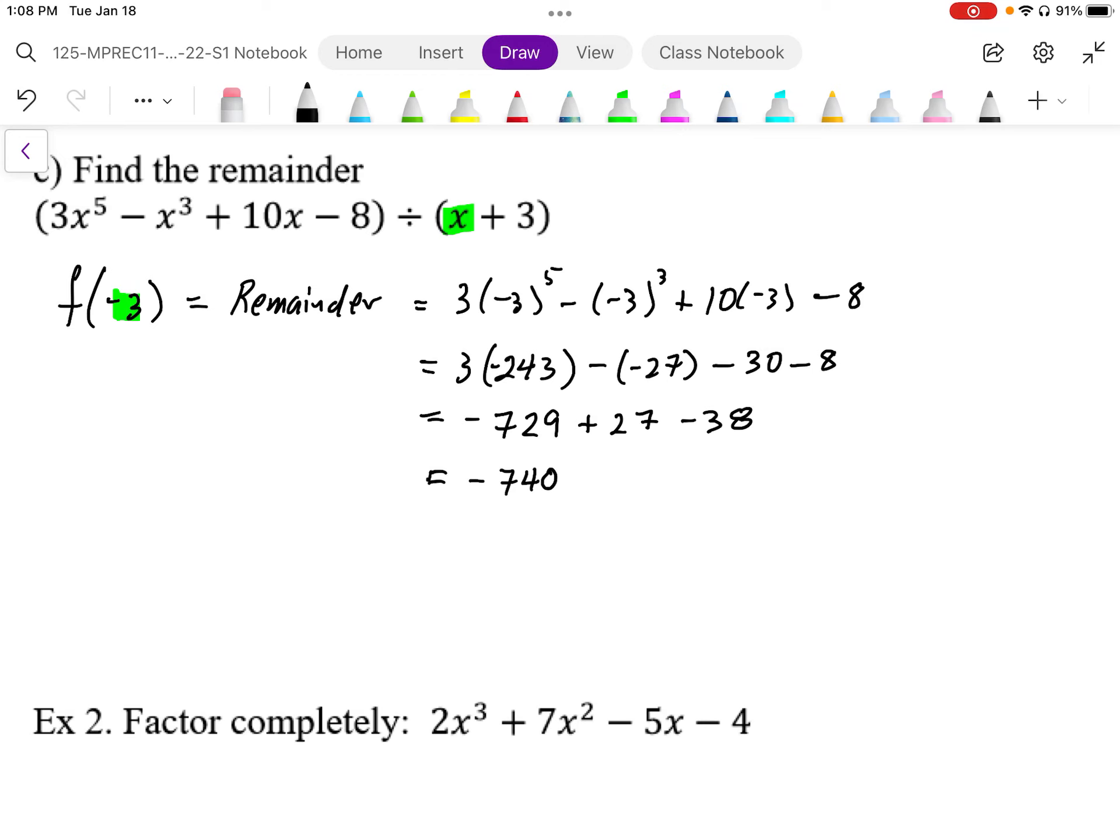Not only that, since we know that f of negative 3 equals negative 740, that's not only a remainder, but it also gives us a coordinate on the graph of that function. So that represents a point on that graph.